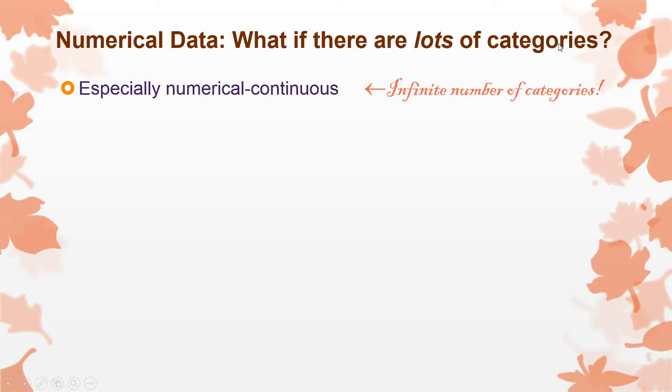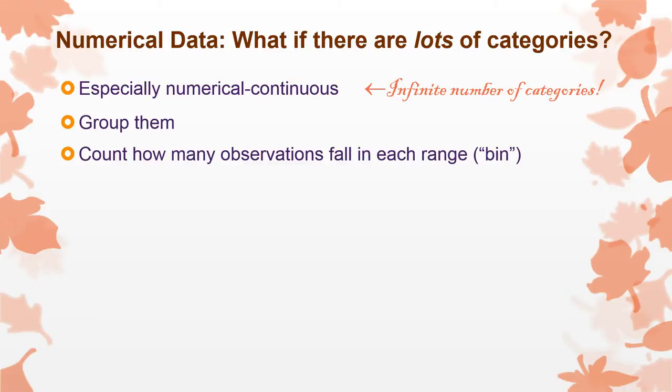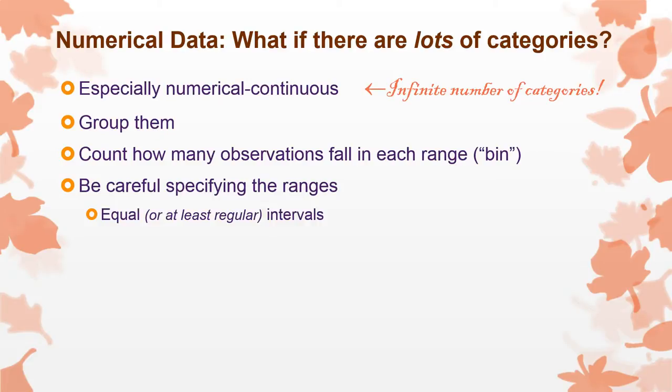Now both of those are turned into percents. The percent based on the frequency and cumulative percent based on the cumulative frequency. Now what if there are lots and lots and lots of categories? In numerical continuous systems technically there are an infinite number of categories. So we group them together. And to do that we have to come up with a system for deciding on a number of bins or a number of ranges.